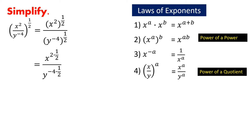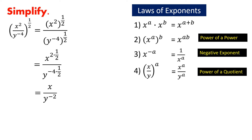We could use the power of a power law. We would have this expression. Simplifying further, we would get this expression. Finally, which of the laws of exponents should we use to rewrite the denominator? We could use negative exponents, even if this example looks a bit different because the negative exponent is already in the denominator. We would end up with x times y to the second power.